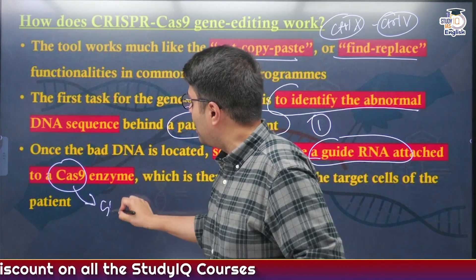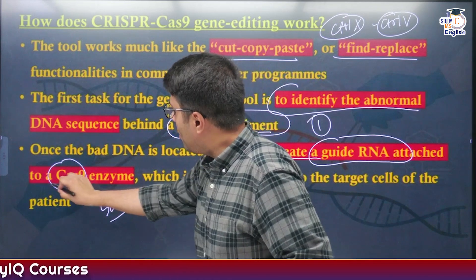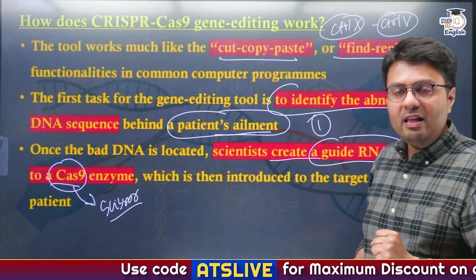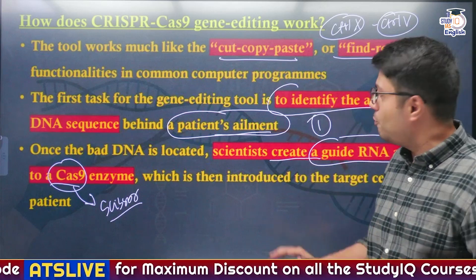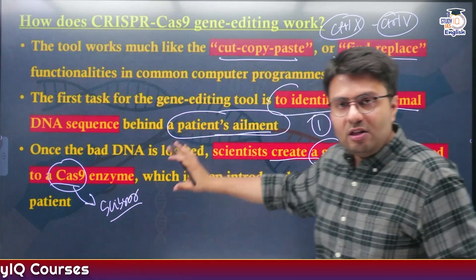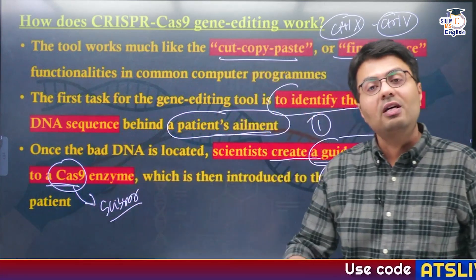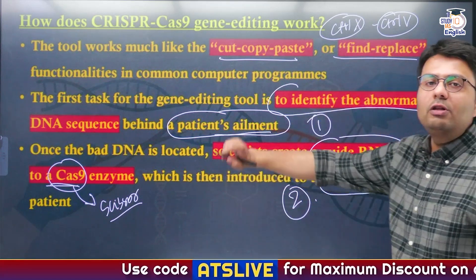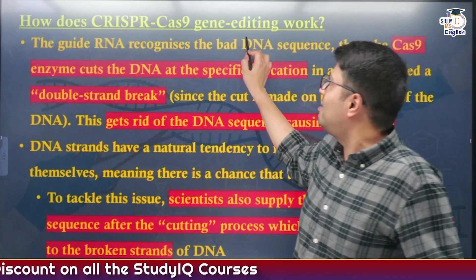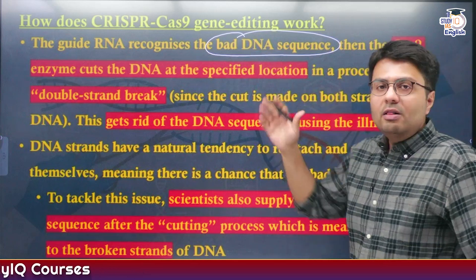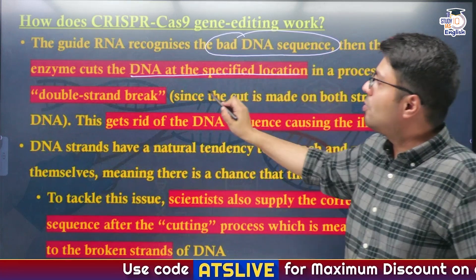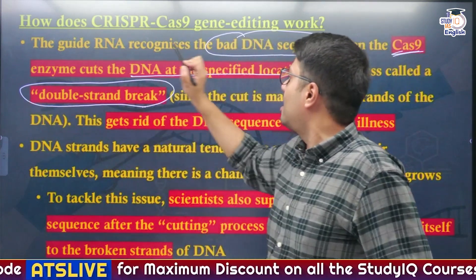The molecular scissor here is Cas9. So scientists first identify the genetic abnormality in the patient, then create a guide RNA which will target the affected cells in the patient, and this guide RNA is attached to the molecular scissor Cas9. Once the guide RNA recognizes the bad DNA sequence in the patient, the molecular scissor Cas9 cuts the DNA at the specified location.